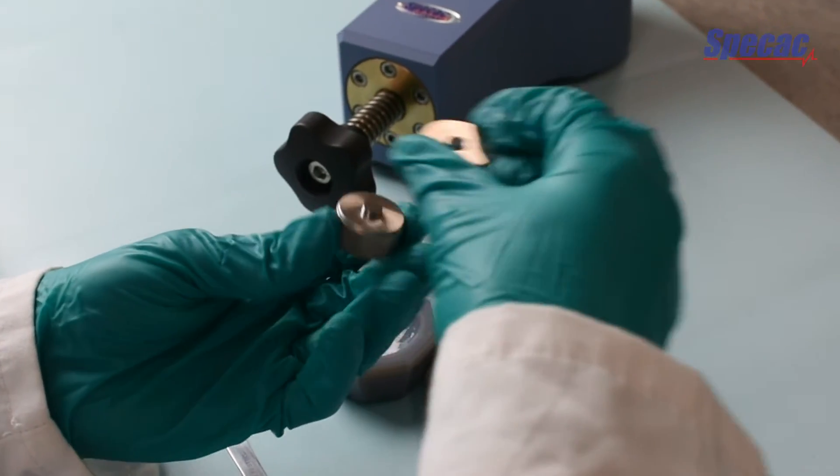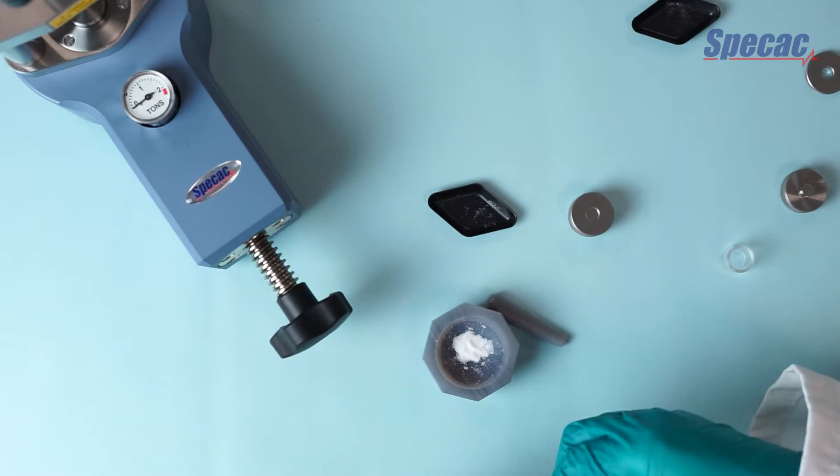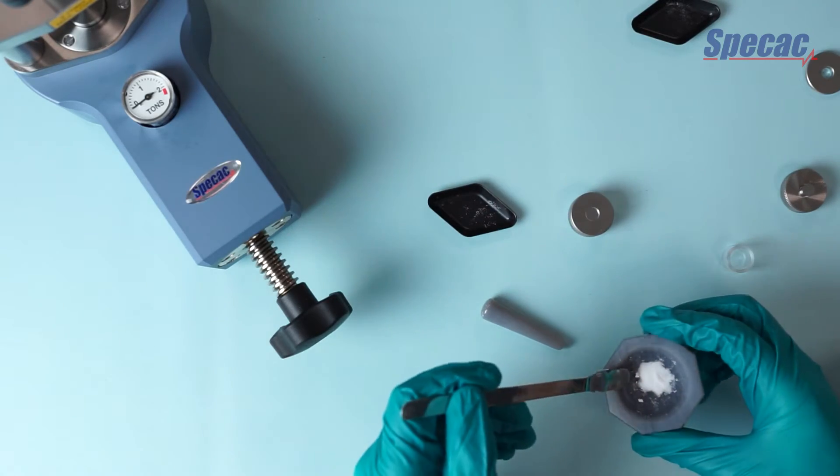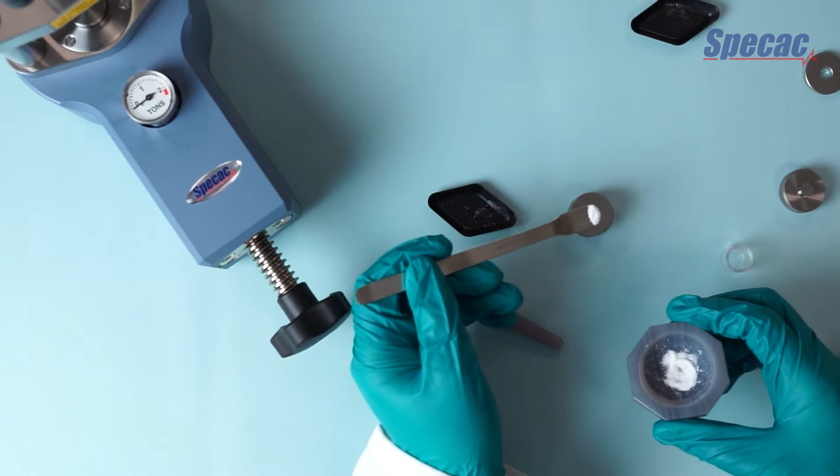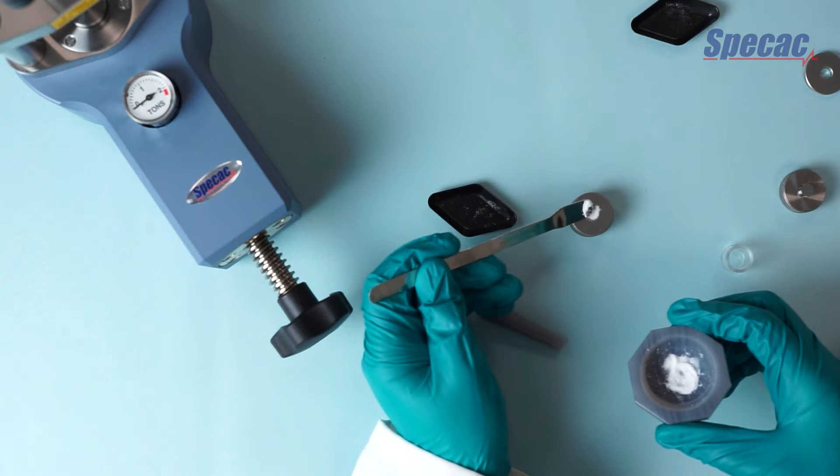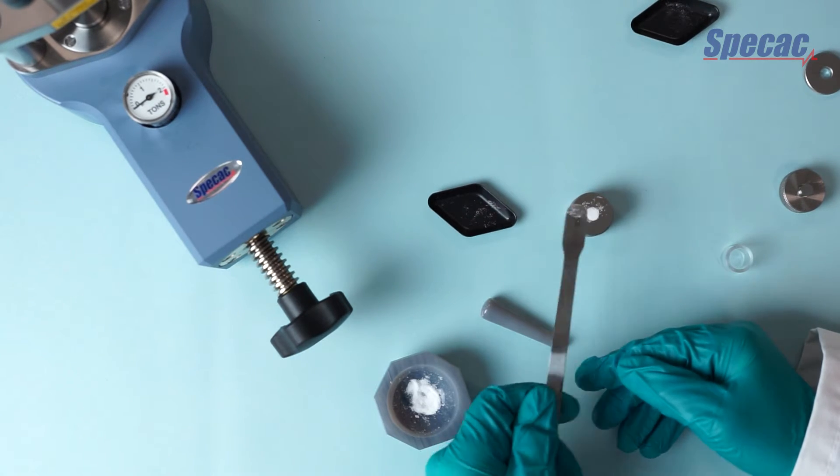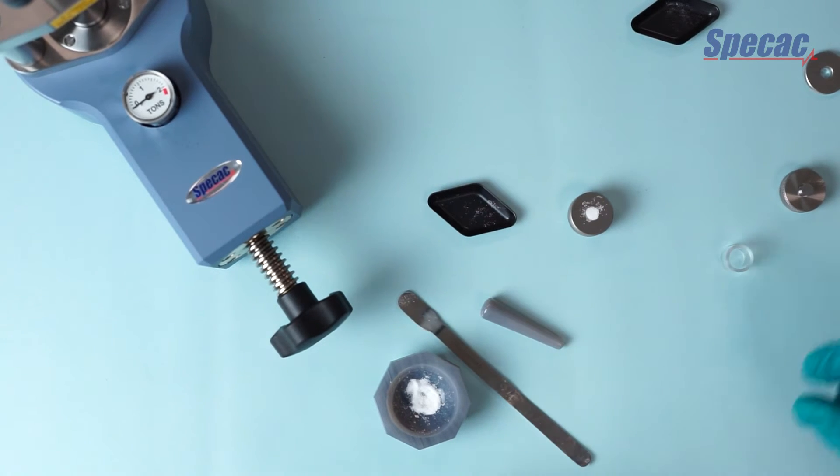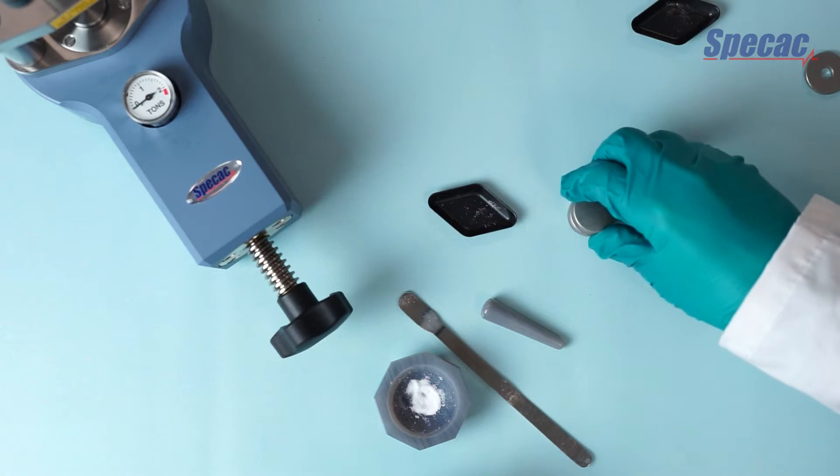So we place the ring holder on the bottom anvil and then we use a spatula to transfer a small amount of sample onto the top of the ring holder. We need enough just to fill up the recess there. We can smooth it down using the spatula and wipe away any excess material, and then gently rest the top anvil in place.